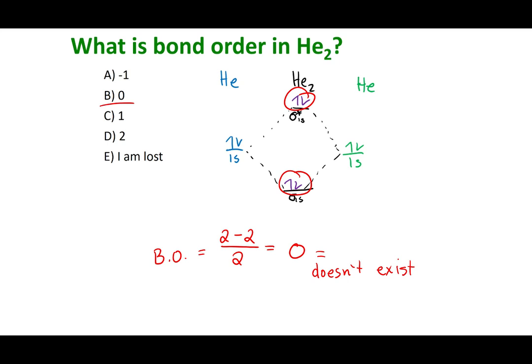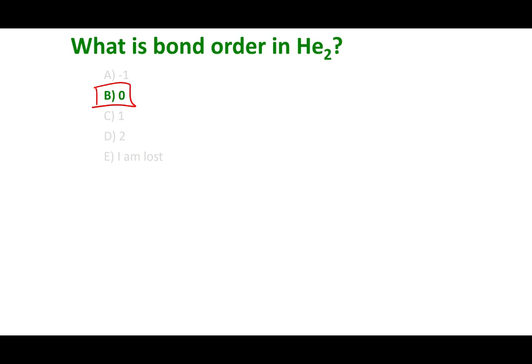Not only can we say this molecule has a bond order of zero, but this also tells us it doesn't exist. If you tried to draw the Lewis dot structure of He2, you'd have a hard time — you'd conclude it does not exist. Now let's test something: what happens if I make He2+? I take that molecule and add a positive charge. Does this molecule exist? Try to figure out the bond order.